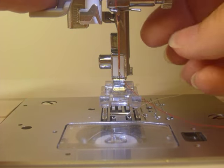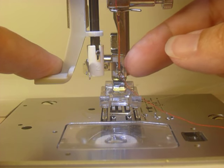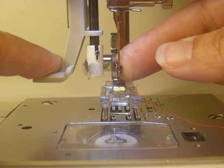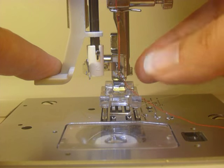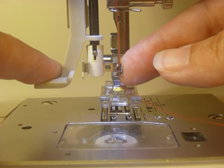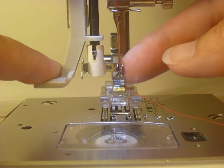Now sometimes that little hook that's inside this fork-shaped mechanism will get bent. So just gently guide it through the center of the eye of the needle with your finger.